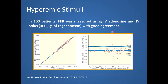What about the use of regadenosine? Regadenosine has become very popular because it is a selective adenosine A2A agonist, resulting in fewer side effects for patients. In a small study published in EuroIntervention in 2015, 100 patients were evaluated. These patients underwent FFR using IV adenosine as well as FFR separately using 400 micrograms of regadenosine, and there was good agreement — the correlation coefficient was 0.991 — and the Bland-Altman plot also showed acceptable agreement.